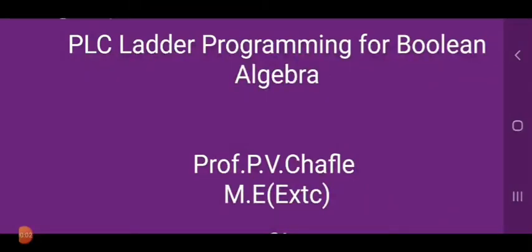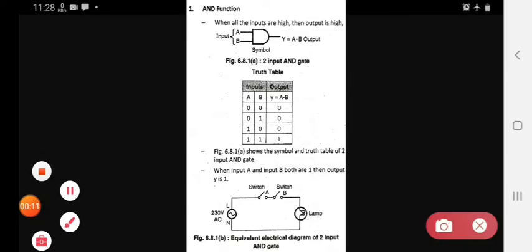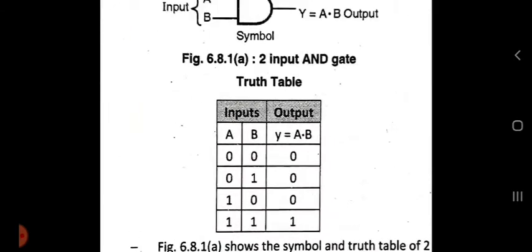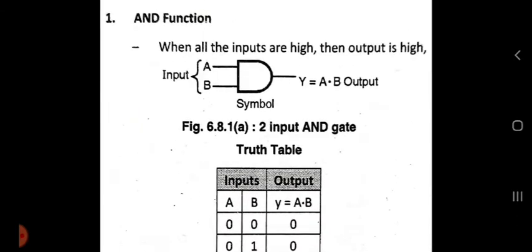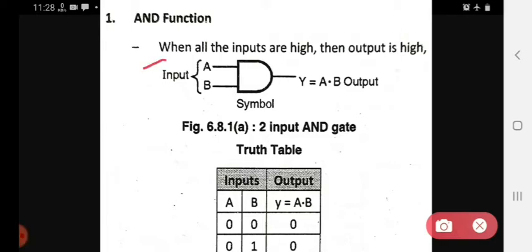Hello students, today we see the PLC ladder programming for Boolean algebra. First, that is the AND function. In the AND function, we already see the symbol and truth table. When all the inputs are high, then the output is high in AND function. These are the two inputs and this is the one output. The equation for AND gate is Y equals A dot B, and this is the symbol.